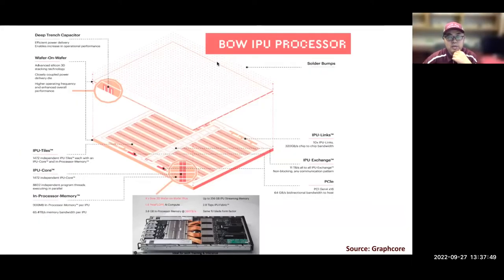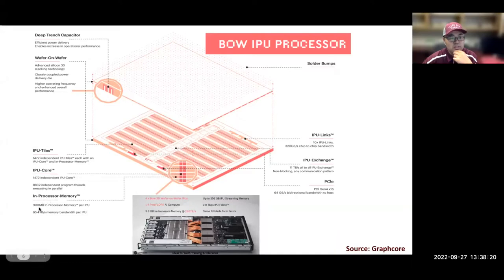This diagram shows the BOW IPU processor. The BOW IPU uses a wafer structure — a 3D stacking technology. Each IPU has 1,472 independent IPU cores and 8,832 independent program threads, built for parallelism. It also has about 900 megabytes of in-processor memory. An IPU core combined with in-processor memory constitutes an IPU tile, and there are many IPU tiles per chip, along with various IPU links.